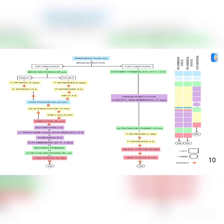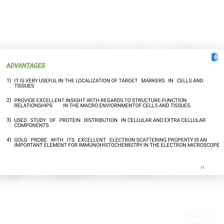The advantages of immuno gold electron microscopy: it is very useful in the localization of target markers in cells and tissues, provides excellent insight with regard to structure-function relationships in the macro environment of cells and tissues, and is used to study protein distribution in cellular and extracellular components. The gold probe, with its excellent electron scattering property, is an important element for immunohistochemistry in electron microscopy.